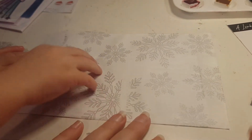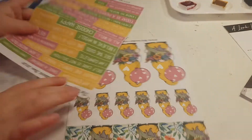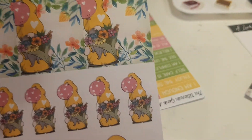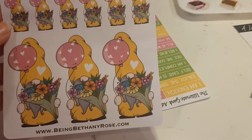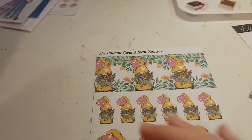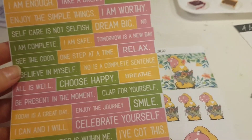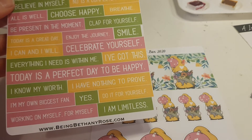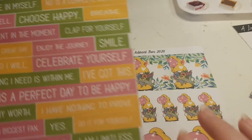Open that one then. Oh wow! From Being Bethany Bows we have — I would say they could be birthdays, Mother's Day, any celebration — a gonk with a balloon and some flowers. And then we have some words: 'I'm enough', 'take a break', 'self-care is not selfish', 'enjoy the journey', 'I can, I will', 'today is a perfect day to be happy', 'I know my worth', 'I am my own biggest fan', 'I am limitless', and 'clap for yourself'.